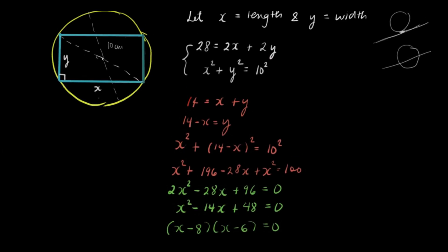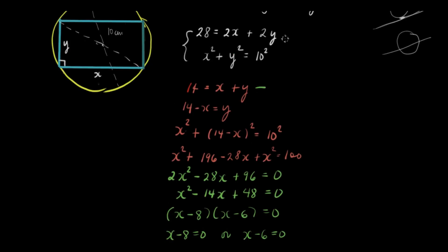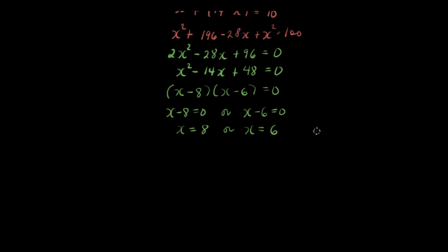We don't have a value for y yet. So let's just use this. Actually you can use this one, but this is the more simplified form. So we have 14 equals x plus y using the first equation. Let's try x. If x is 8, 14 is equal to 8 plus y. Therefore y is equal to 6.